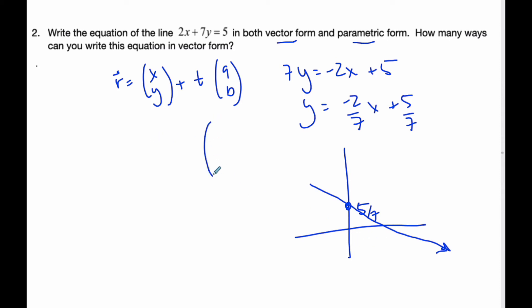So my direction vector, well, if I think about here, right, that means I'm going to go, my x value is 7 and my y value is negative 2. Because I go here, I'm going to go over 7 and down 2. Here's 7 and 2 is my direction vector. So there's my direction vector.